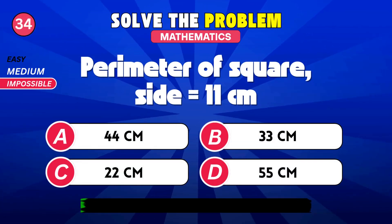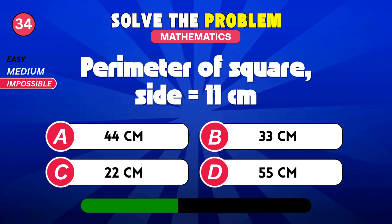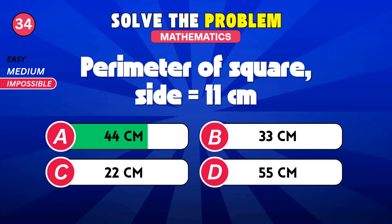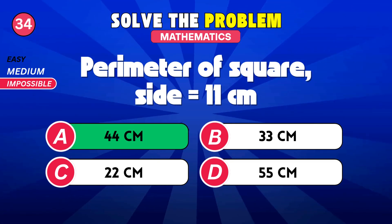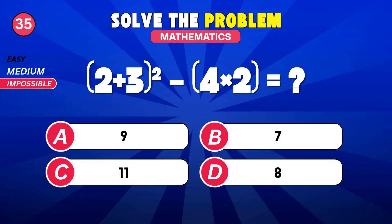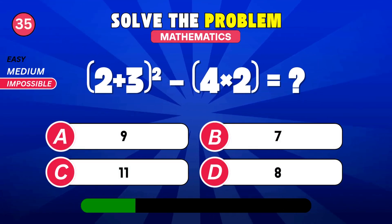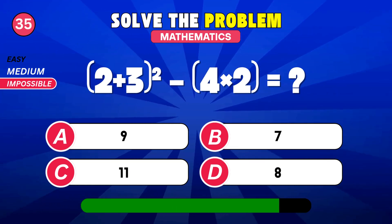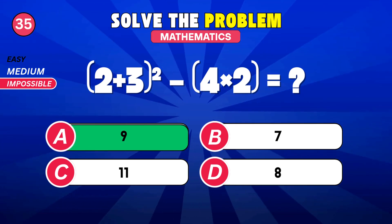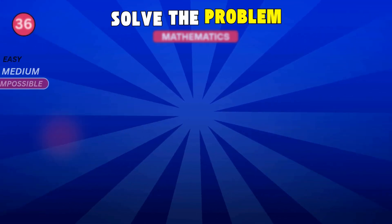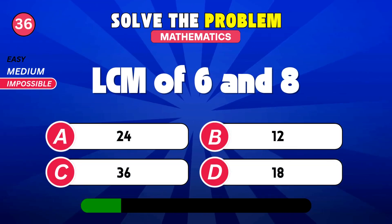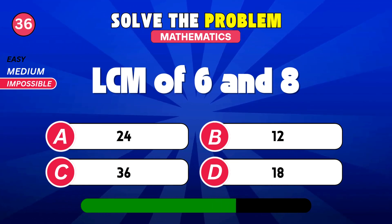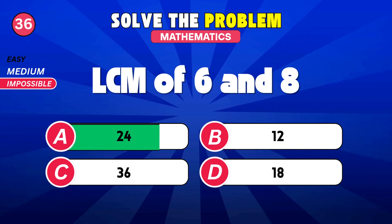Find perimeter of square. 44 centimeters. Solve the equation. 10. 9. LCM of 6 and 8. 24.